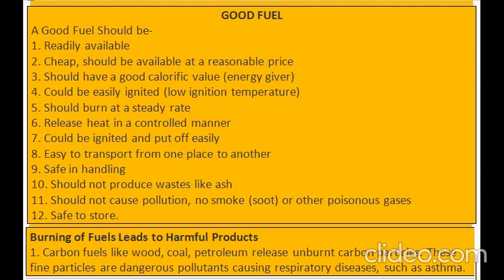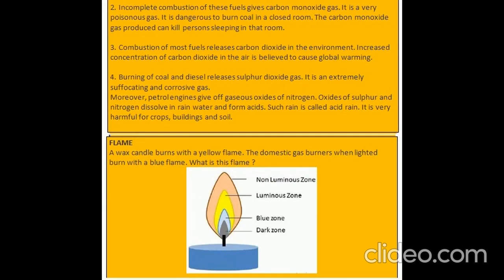Burning of fuels leads to harmful products: 1. Carbon fuels like wood, coal and petroleum release unburnt carbon particles — fine particles that are dangerous pollutants causing respiratory diseases such as asthma. 2. Incomplete combustion gives carbon monoxide gas, which is very poisonous. It is dangerous to burn coal in a closed room as carbon monoxide can kill persons sleeping there. 3. Combustion of most fuels releases carbon dioxide, whose increased concentration causes global warming. 4. Burning coal and diesel releases sulfur dioxide — a suffocating and corrosive gas. Petrol engines give off oxides of nitrogen. Oxides of sulfur and nitrogen dissolve in rain water and form acids — this is called acid rain, which is harmful for crops, buildings and soil.